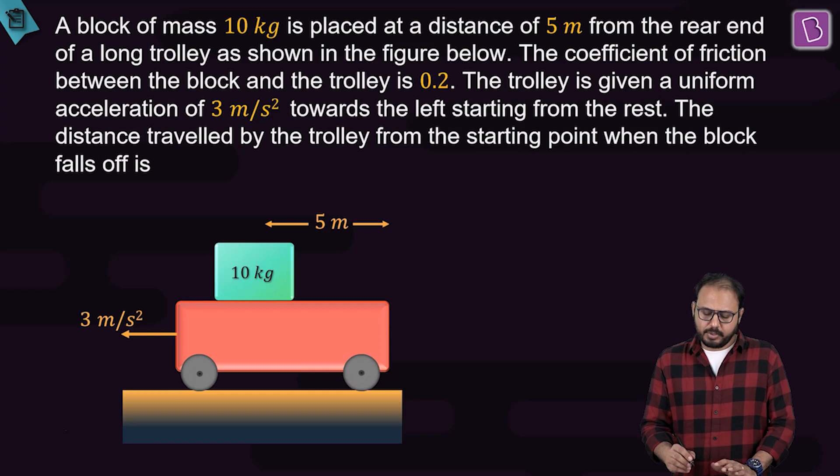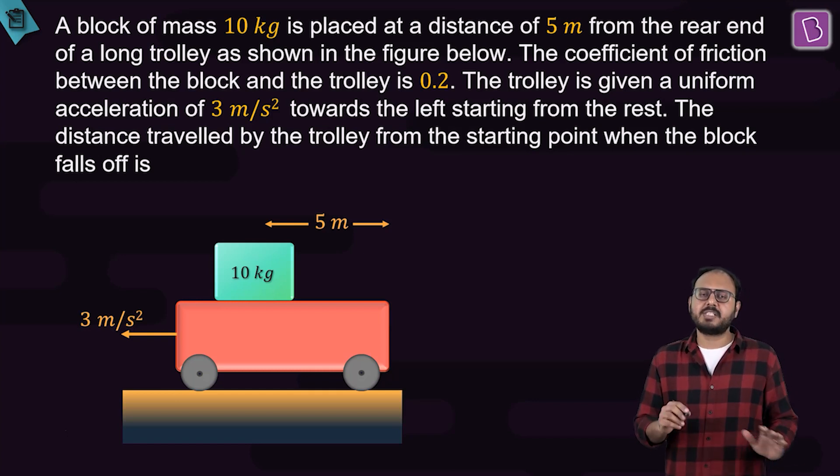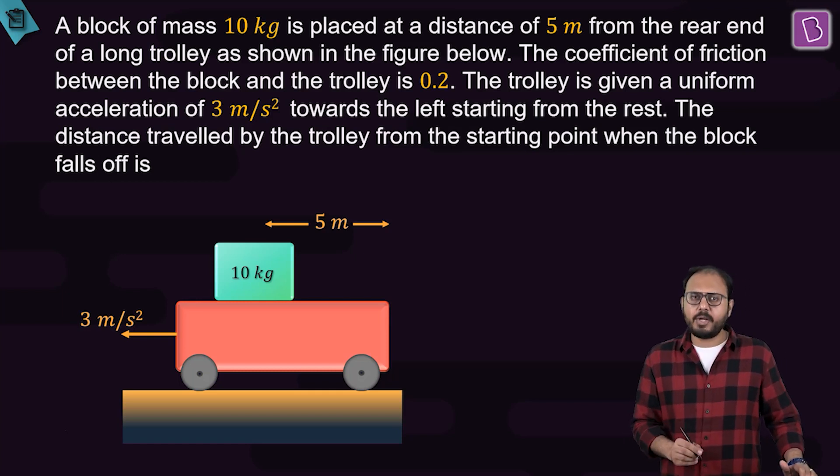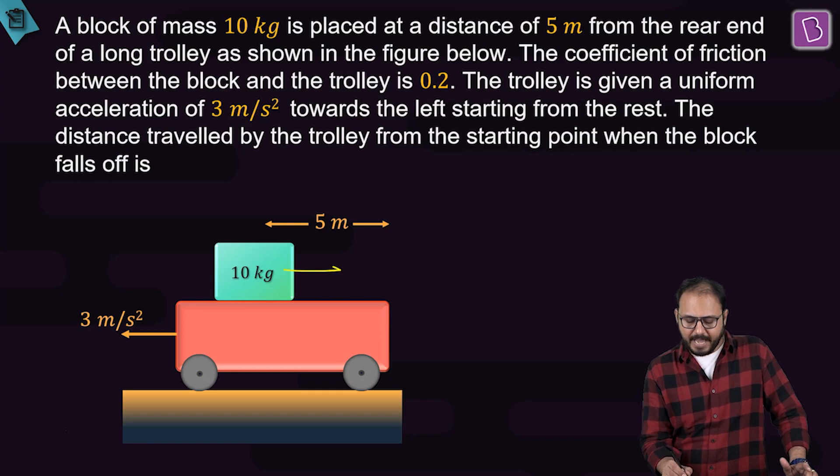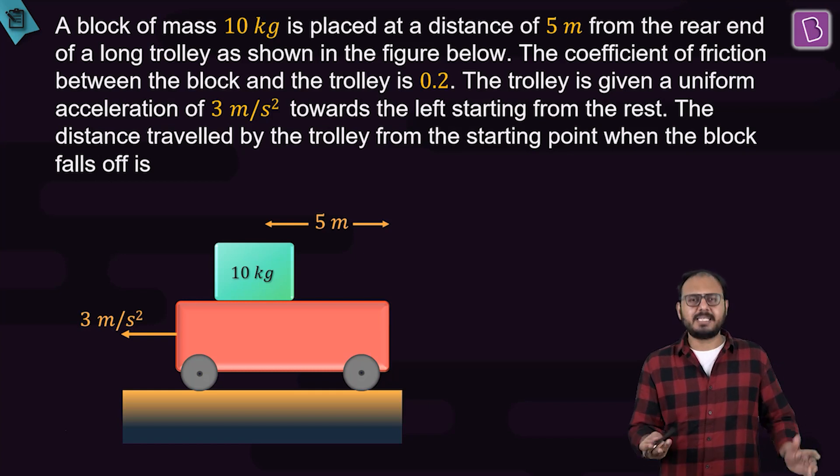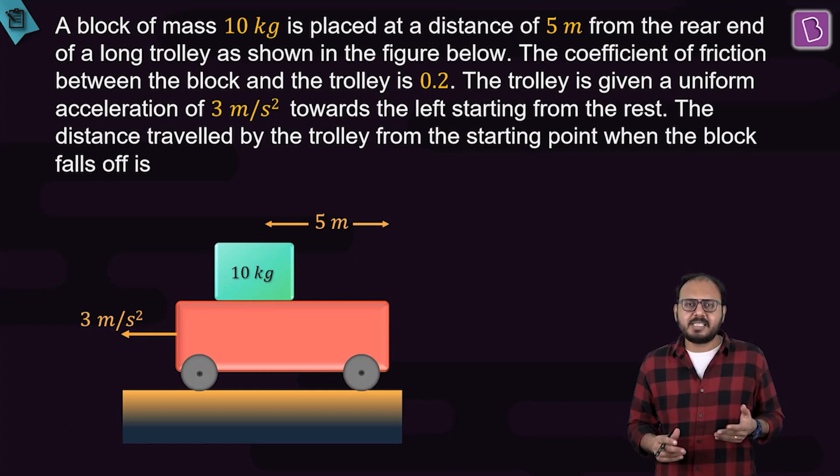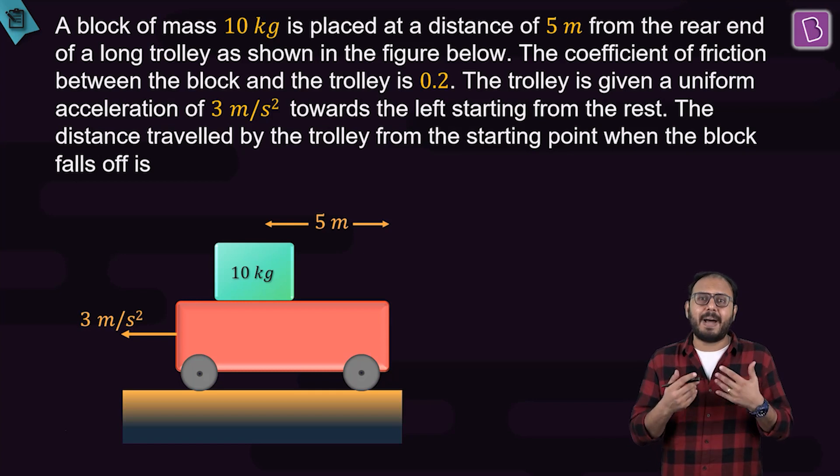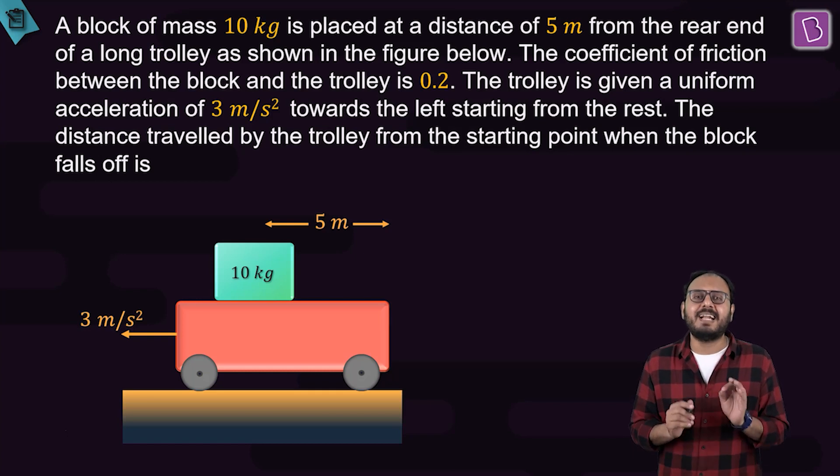What is the motion of the block 10 kg as seen from the ground or as seen from the trolley? Easier way to describe is from the trolley frame. From the trolley frame, the 10 kg has a tendency to slip back. Same thing - the coin and the cardboard. If I pull the cardboard towards, then the tendency of the coin is to slip back off.